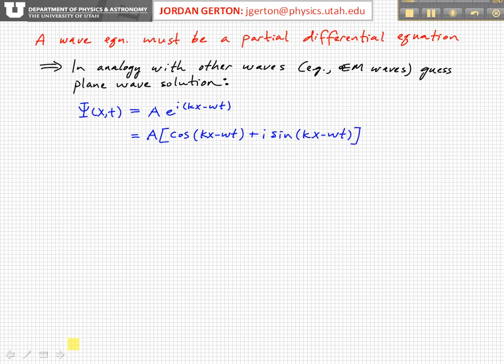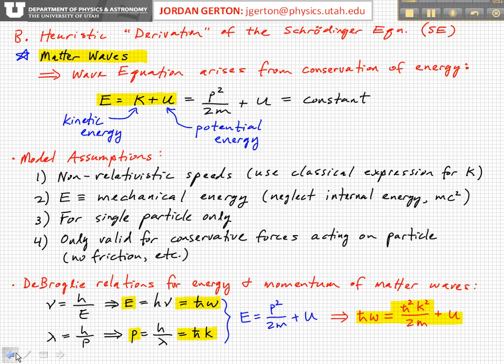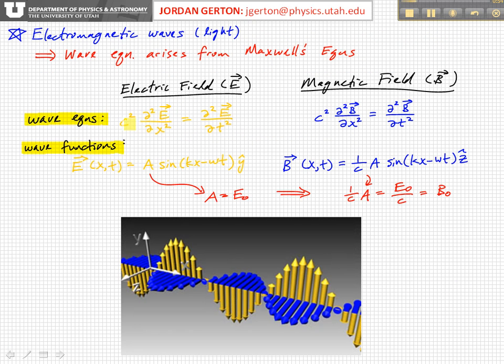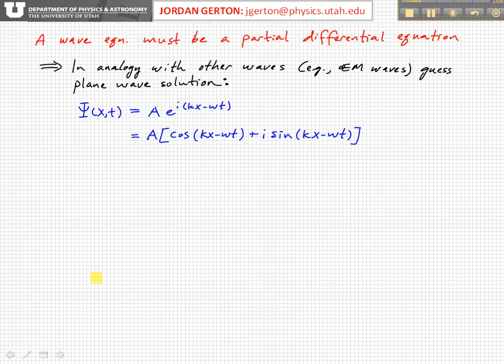In analogy with other waves, if we look at the solution to the wave equations for electromagnetic waves, then the basic solutions are plane waves. These E and B as I've written them are plane wave solutions. So if we just guess that the solution to the Schrödinger equation are also going to be plane waves, then we can write down that guess and see where it takes us.